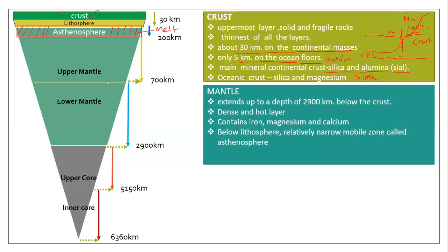Next is the mantle, which is the second layer. The most important thing is that this is the thickest layer, extending up to 2900 km. There are two parts: upper mantle and lower mantle. The upper mantle is melted, while the lower mantle is made of hard rock.